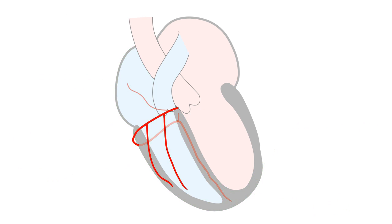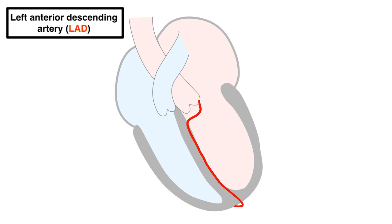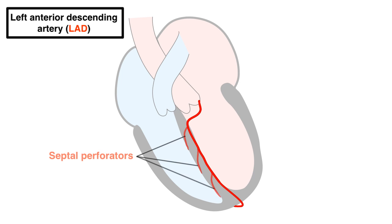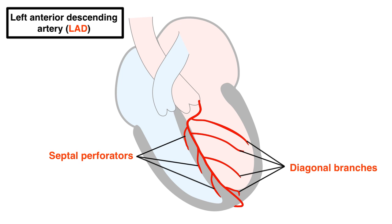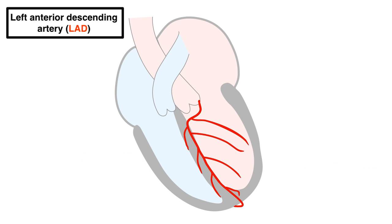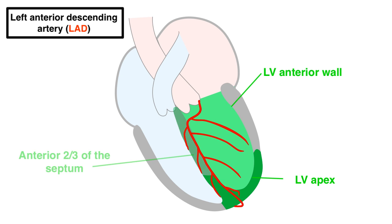The left anterior descending artery, or LAD, stays true to its name and goes down anteriorly towards the apex of the left ventricle, giving off septal perforators on one side and diagonal branches on the other. The LAD vascularizes the anterior wall and the apex of the left ventricle, as well as the anterior two-thirds of the interventricular septum.